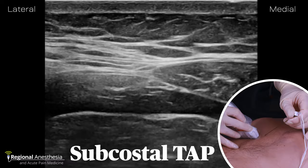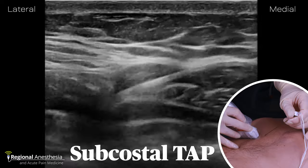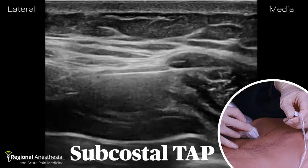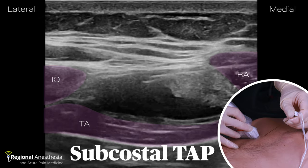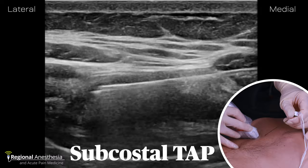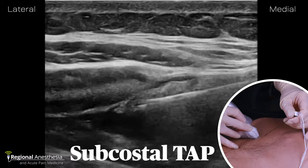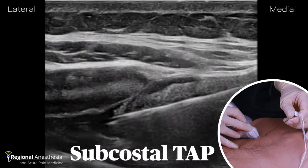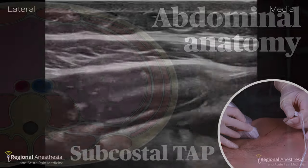One of these is the oblique subcostal TAP block. The idea here is to place local anesthetic just below the costal margin in the plane superficial to the transversus abdominis muscle. You can see the local anesthetic peeling apart that plane between rectus abdominis and the transversus, continuing to unzipper that same plane as the needle is advanced laterally and caudally, ending up between internal oblique and transversus.